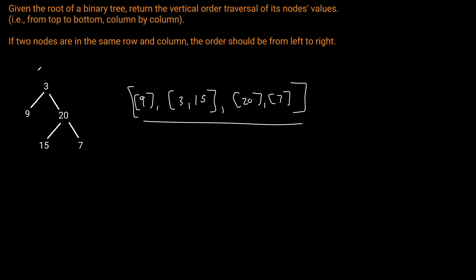Let's be smart here. Let's pretend the root can be considered as the coordinate (0, 0). When we go to the left, we're moving the x coordinate to the left by 1 and increasing the y coordinate by -1, so that node can be considered coordinate (-1, -1). To go to the 20 node, we move the x coordinate by +1 and decrease the y coordinate by 1, so that coordinate is (1, -1).